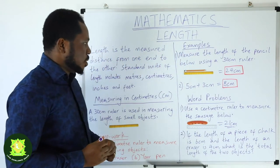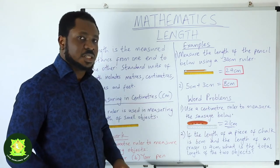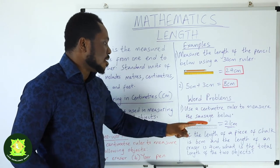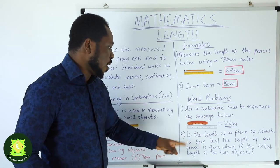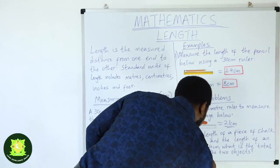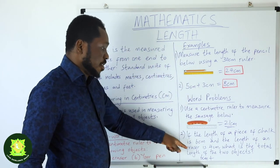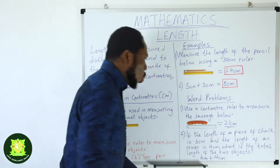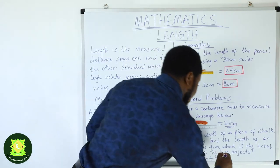Let's do the second word problem. If the length of a piece of chalk is 6 centimeters and the length of an eraser is 4 centimeters, what is the total length of the two objects?